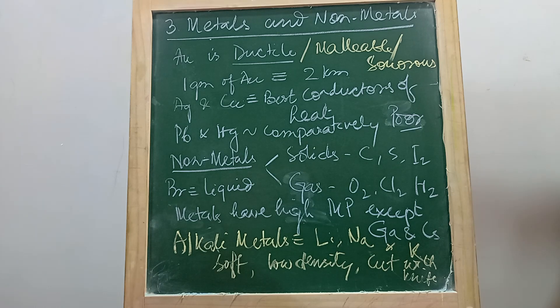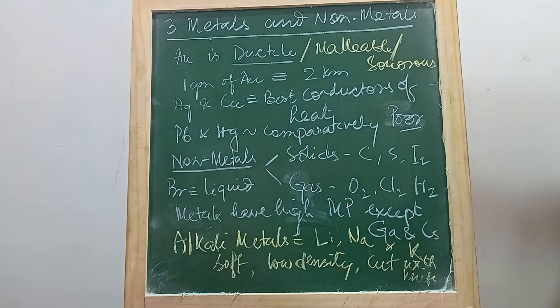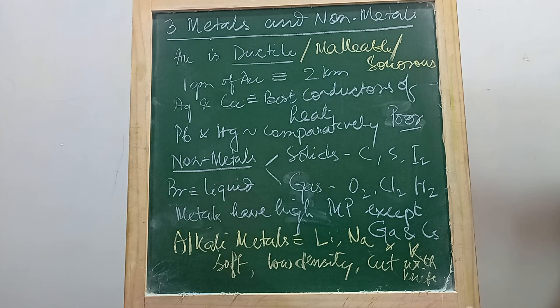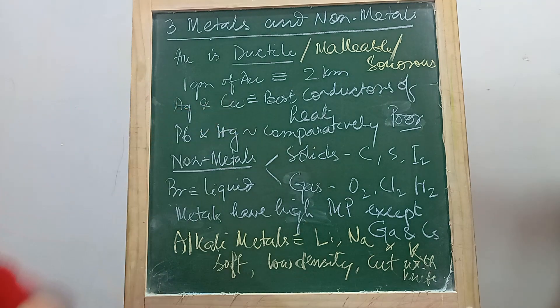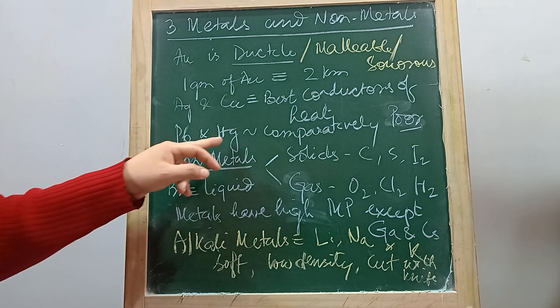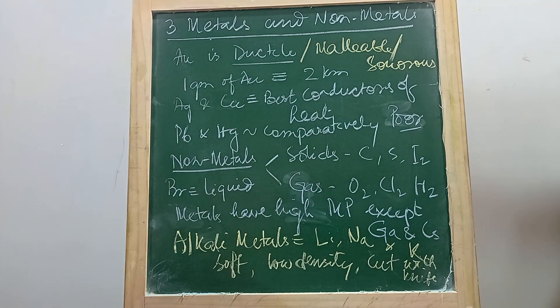Metals are also the best conductors of heat and electricity. For example, silver and copper, they are the best conductors of heat. But then there are some metals like lead and mercury which are comparatively poor conductors of heat.